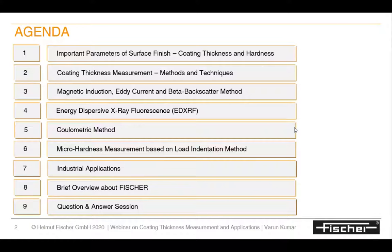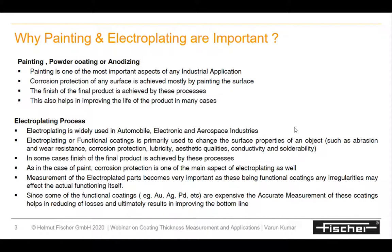Coming to the main point — why painting and electroplating are important. As you are from the industry, you are aware of how important paint, powder coating, or anodizing plays a part in the final finish of a product. Painting is one of the main aspects of corrosion protection. Similarly, electroplating is also a form of corrosion protection, and it also has functional properties that help in improving the functional properties of items.